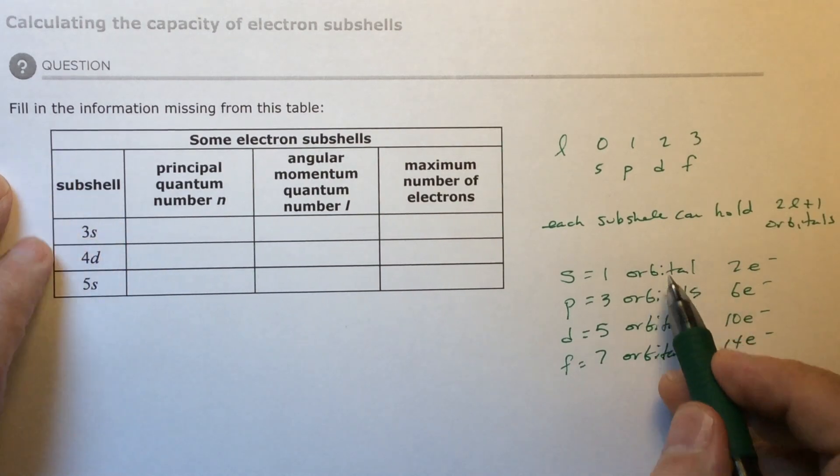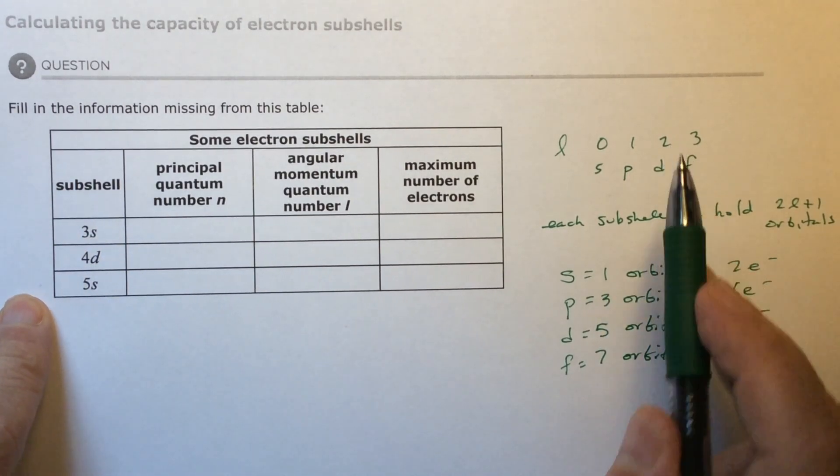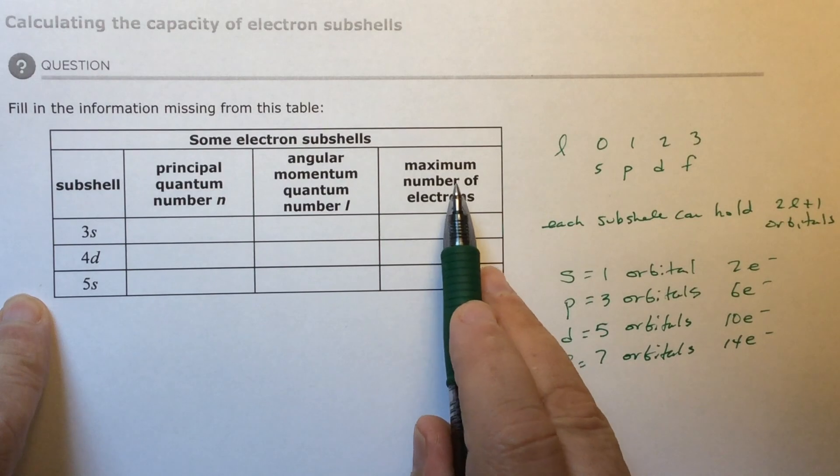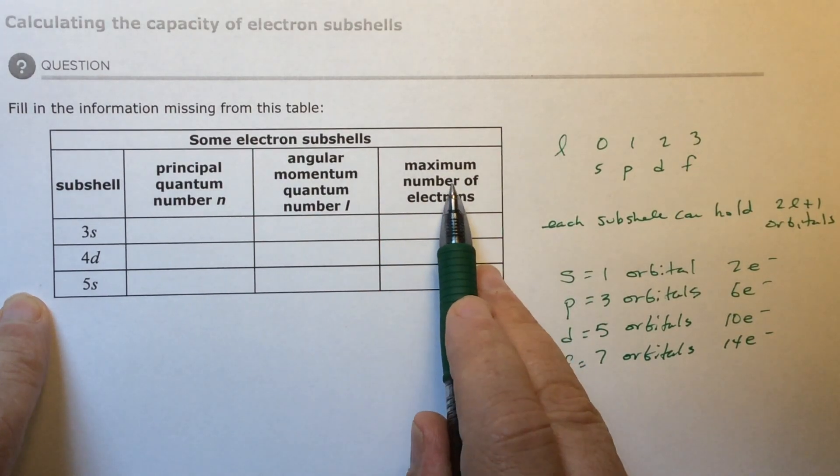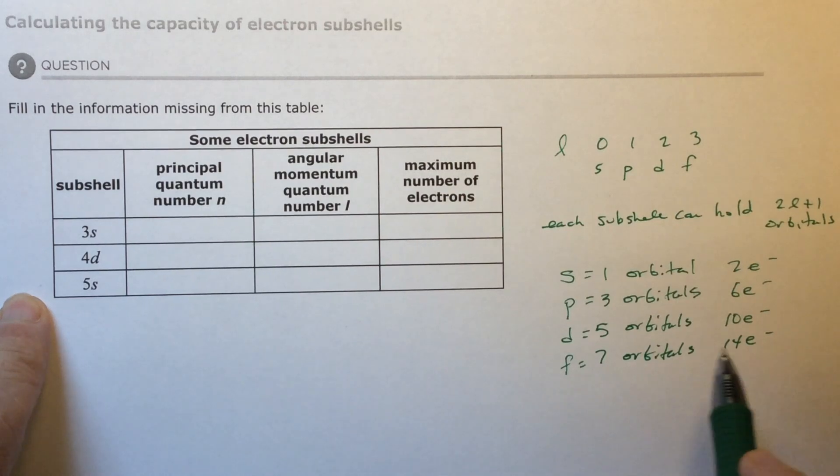So the L number should tell you how many orbitals you are, and then the orbitals should tell me how many electrons, because I'm going to double the number of orbitals possible. So let's try this.